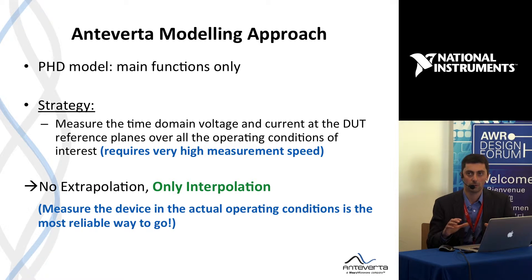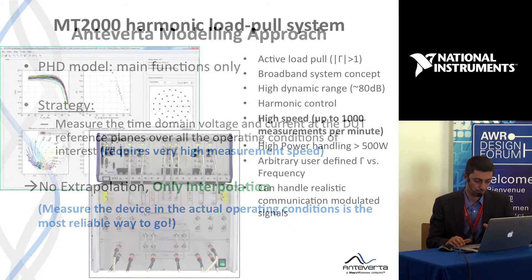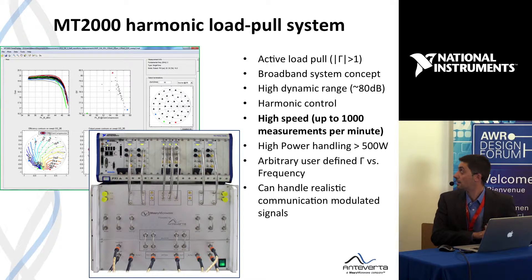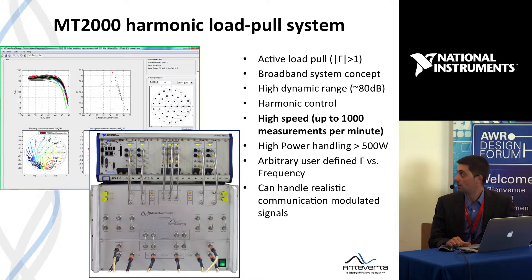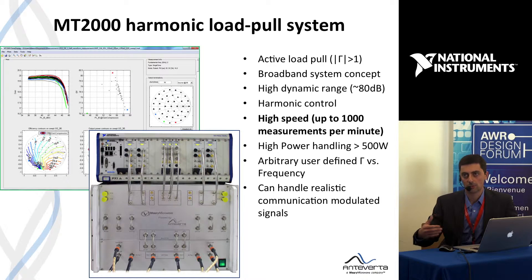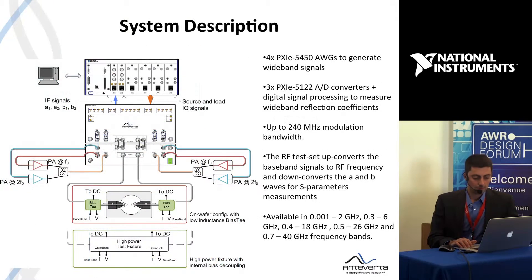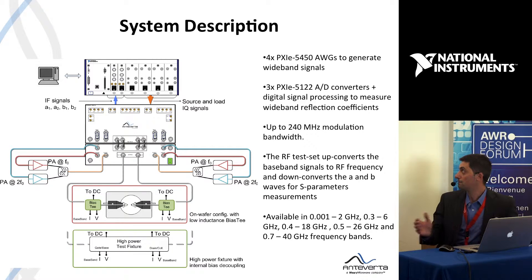Here is a brief summary of our active harmonic load-pull system capabilities. It's a system based on an IPXI platform related specifically to model extraction. It can sweep not only fundamental but also second and third harmonic loading conditions, with an extremely high measurement speed of about 1,000 measurement points per minute. It's a very broadband system with different frequency bands available.